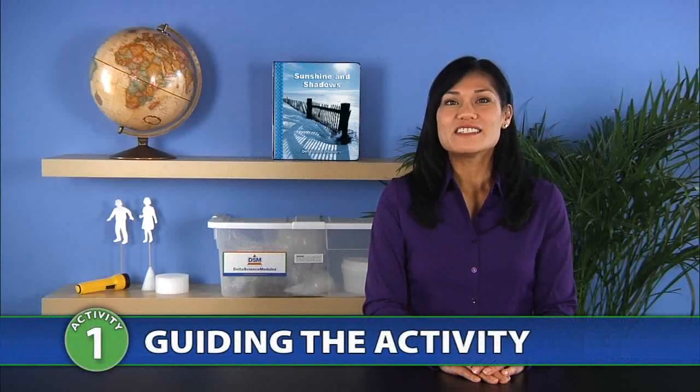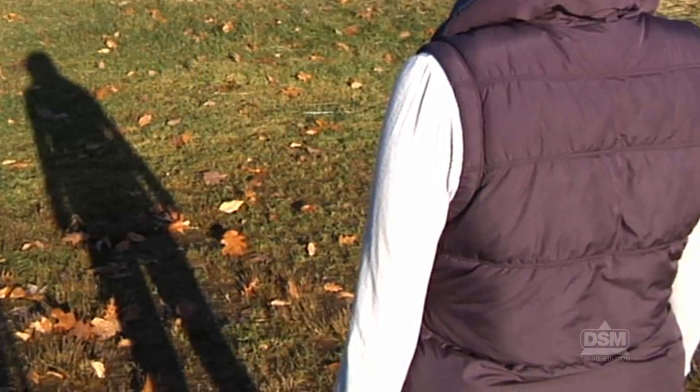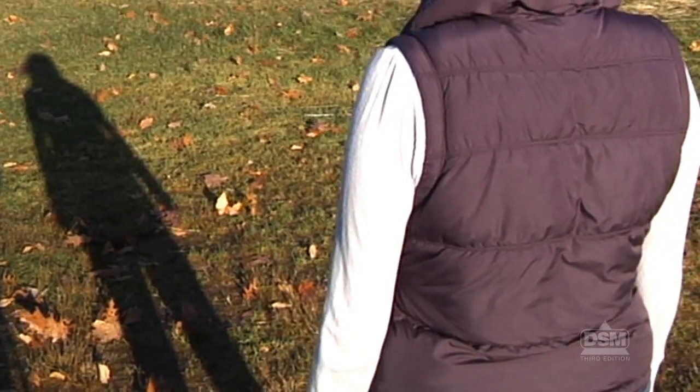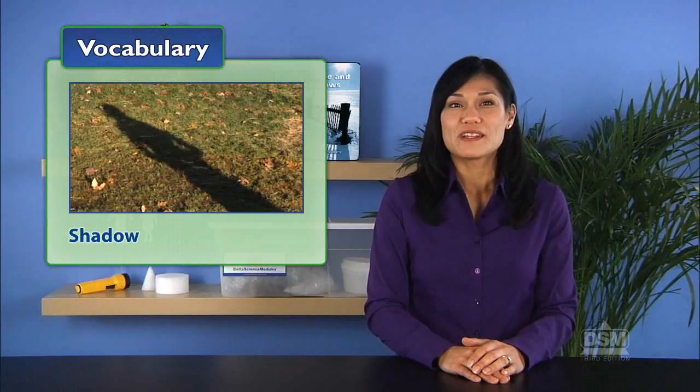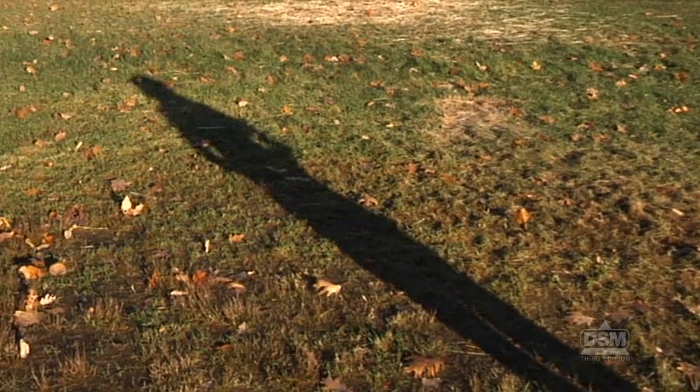To begin the activity, take the students outside on a sunny day. Instruct them to line up with their backs to the sun. Tell them to look at the ground in front of them and ask, 'What do you see?' If students do not mention the word shadow, tell them they are seeing their shadows and that they should point to them. Then invite volunteers to describe their shadows. Students may mention that their shadows are dark and have a shape similar to their bodies.